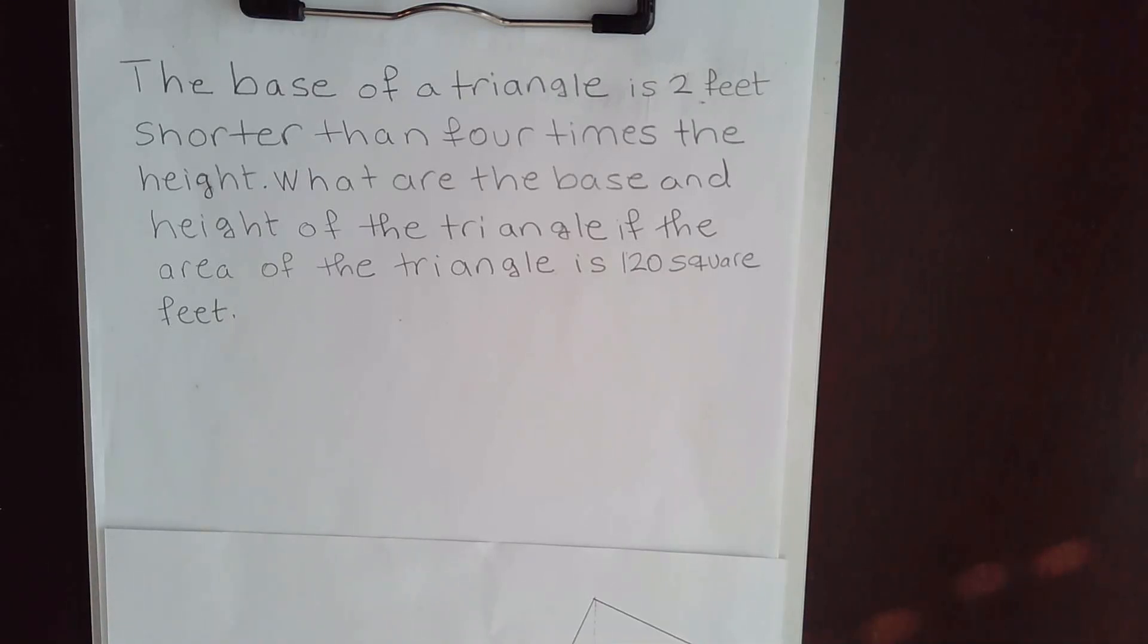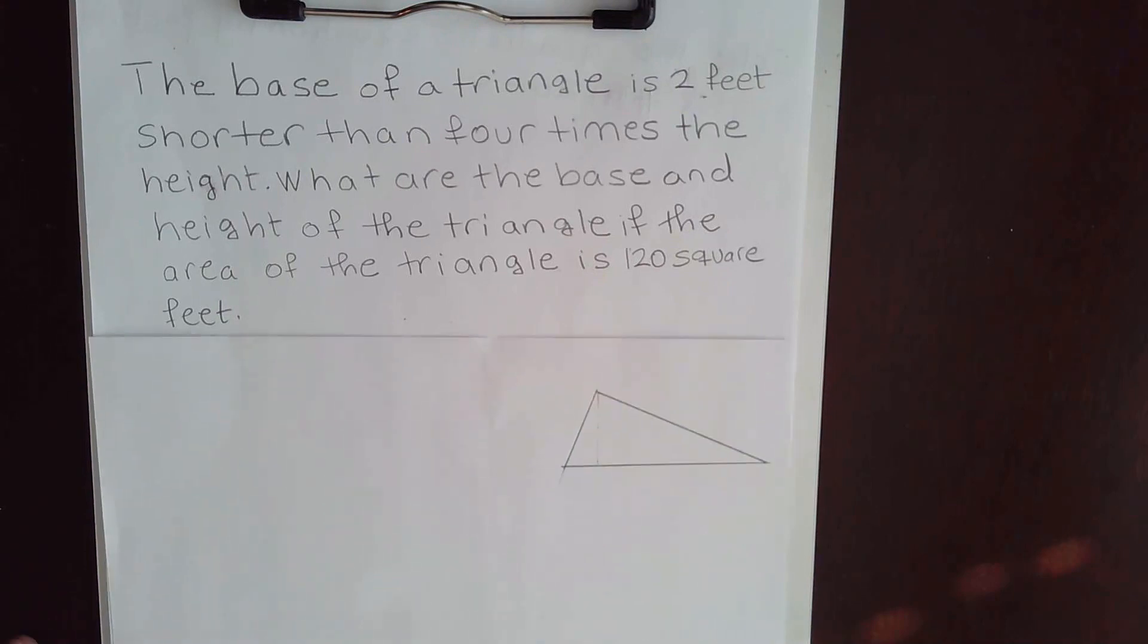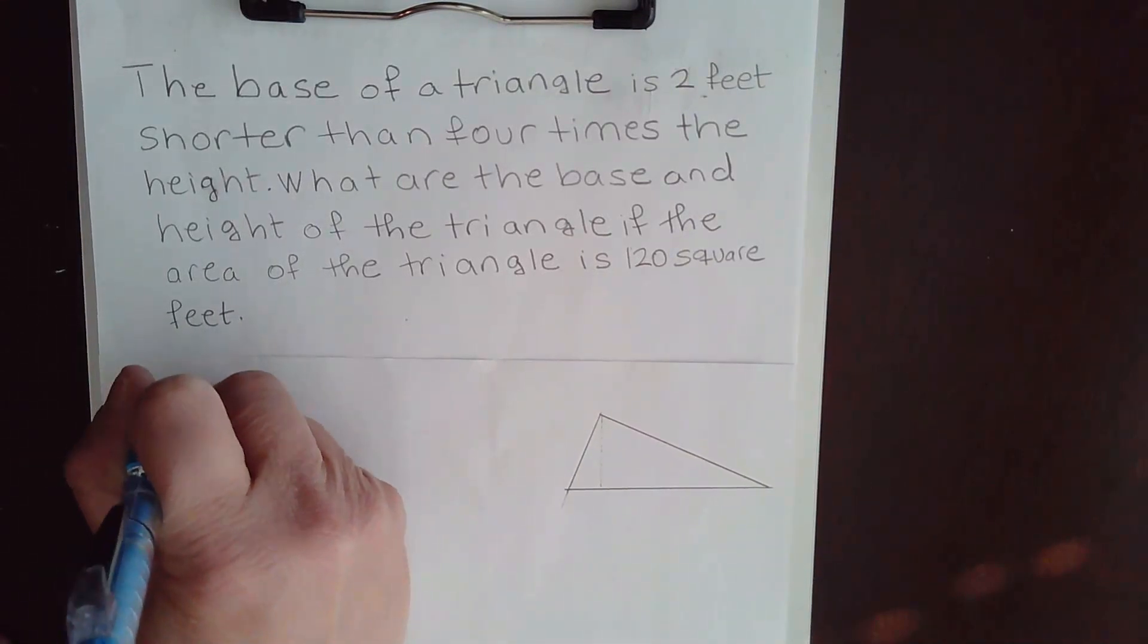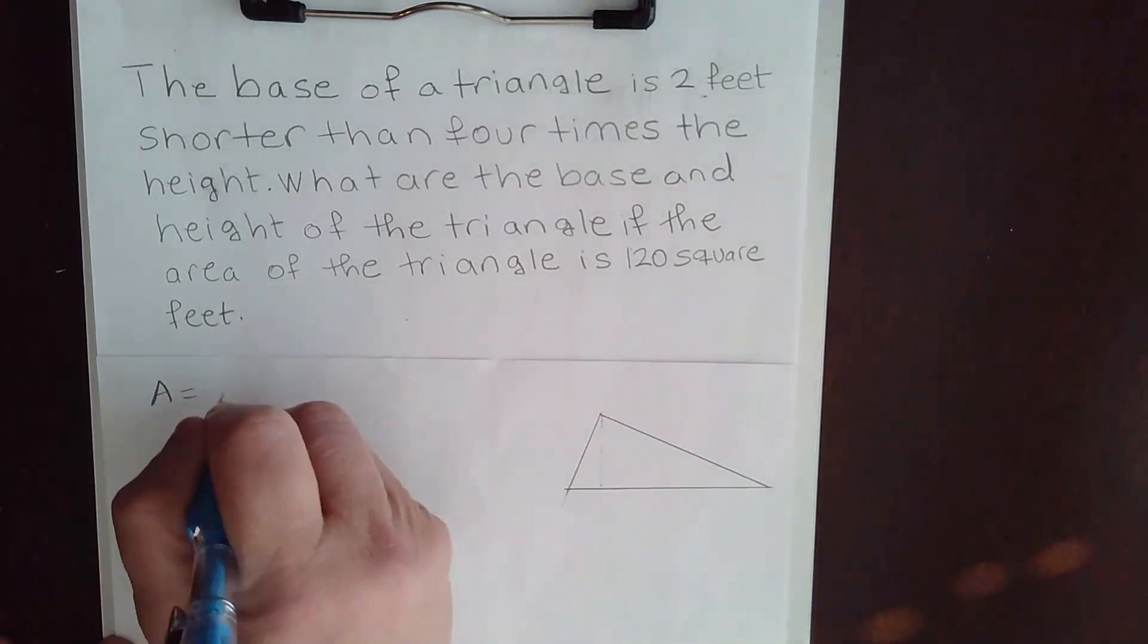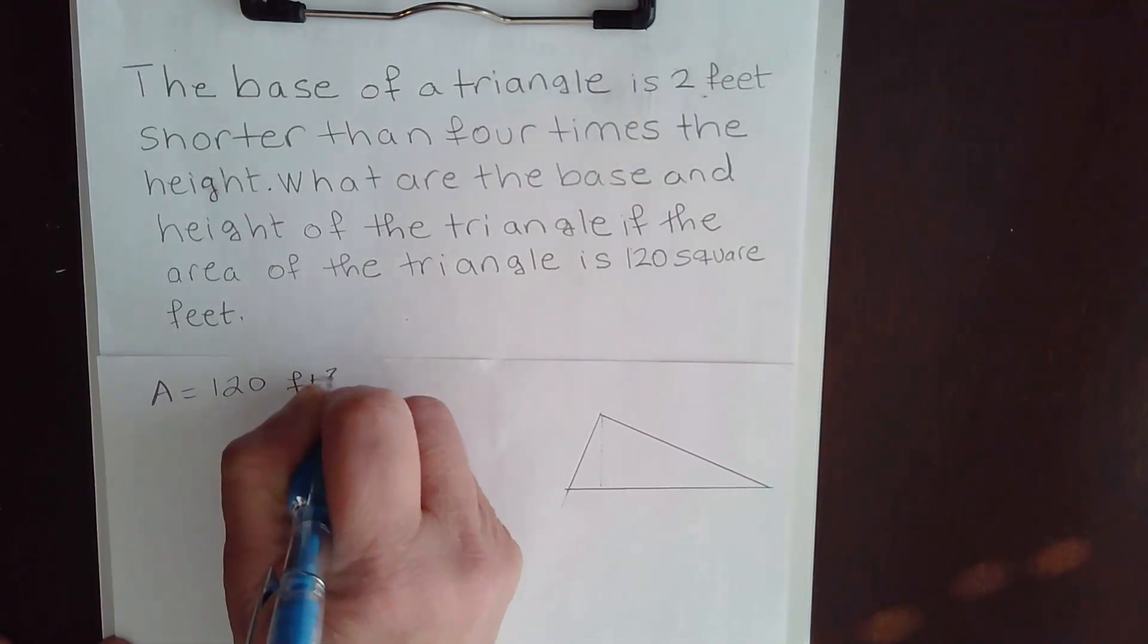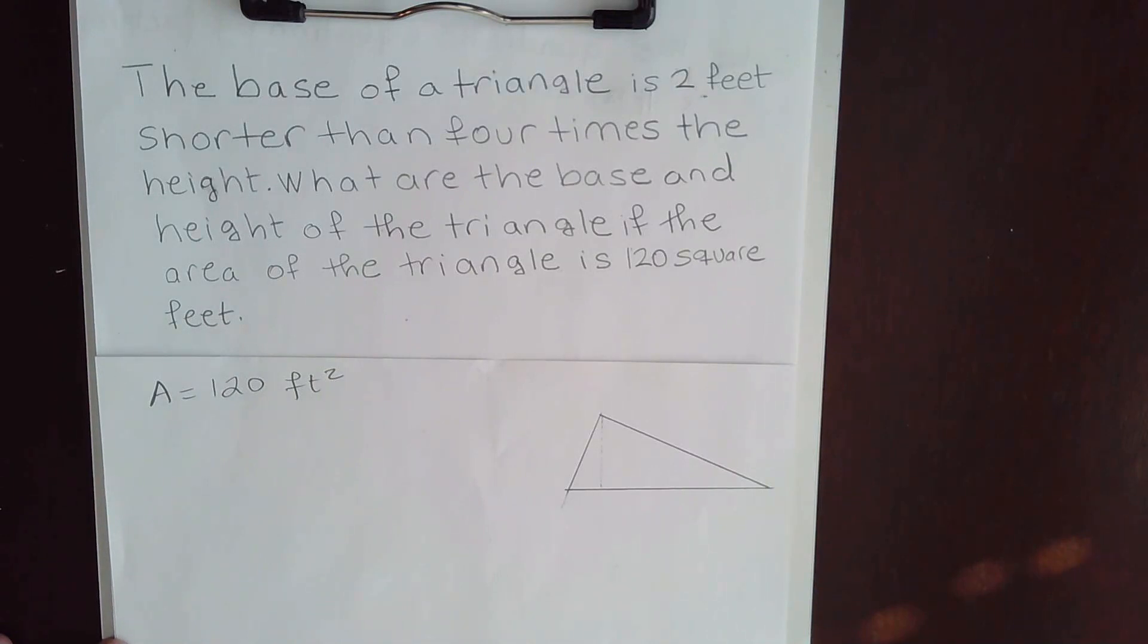So we need to write down what we have. We have a triangle. So here's our triangle. What else do we have? We have the area. They given us the area to be 120 square feet. So we have the area. We do not have the base and we do not have the height.